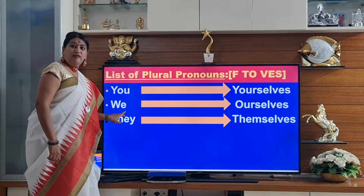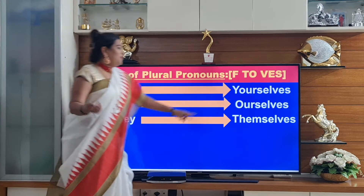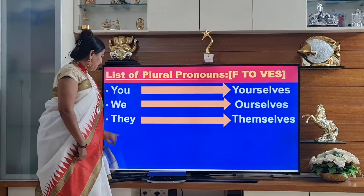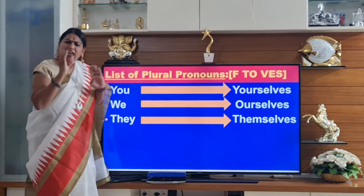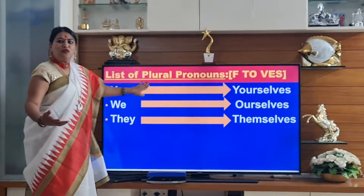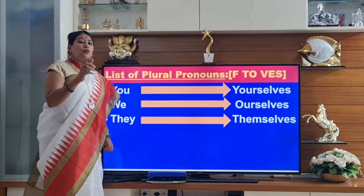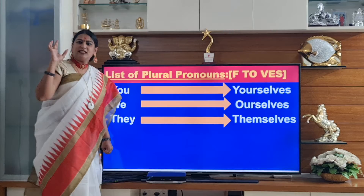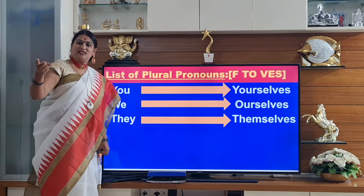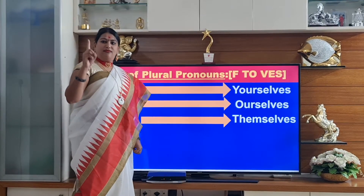We will become ourselves. We means more than one, so obviously F gets replaced with VES — ourself becomes ourselves. They will become themselves. So you should know: if it's more than one, add VES. For singular, SELF will come; for plural, F gets replaced with VES, that is SELVES.